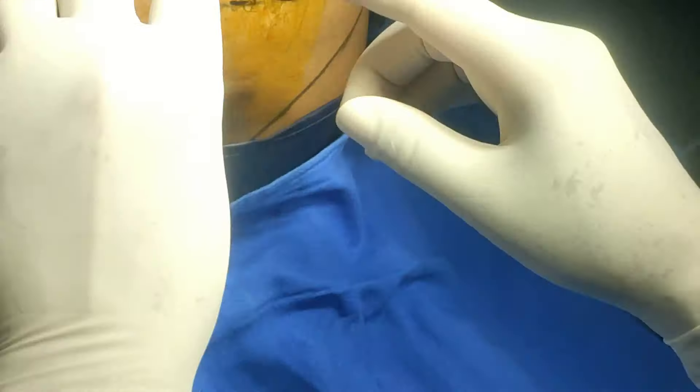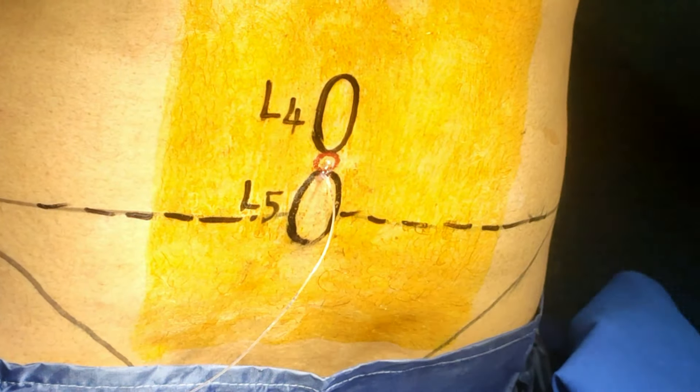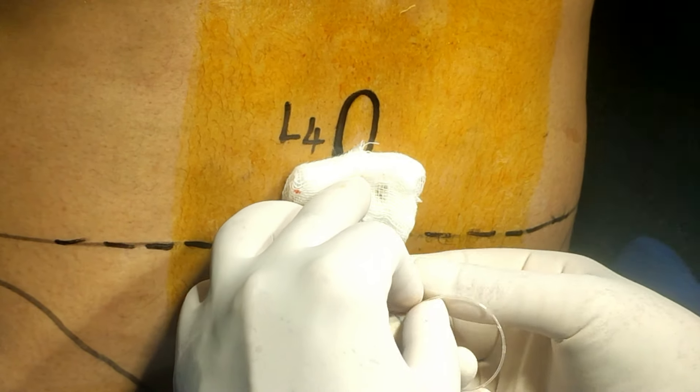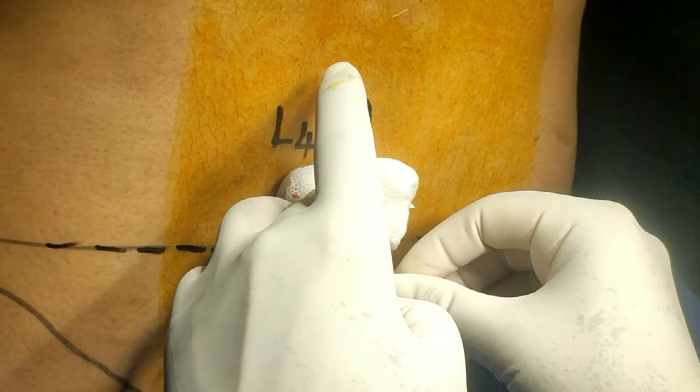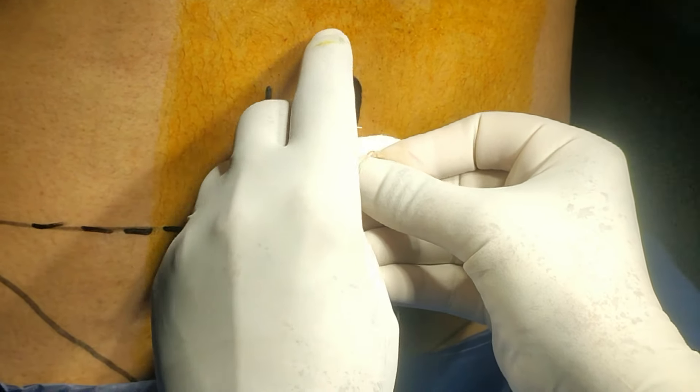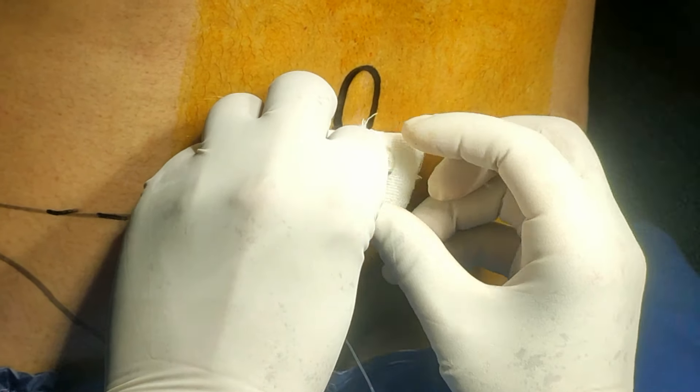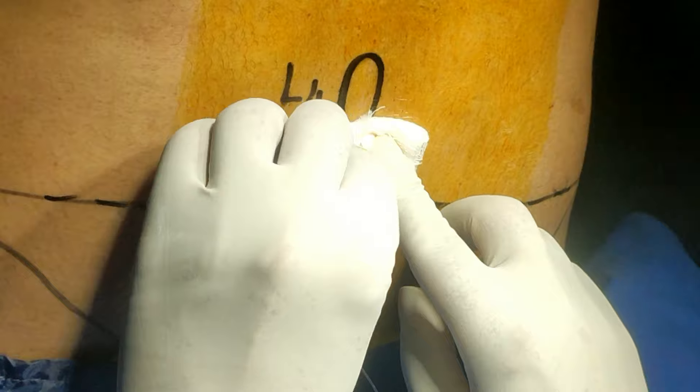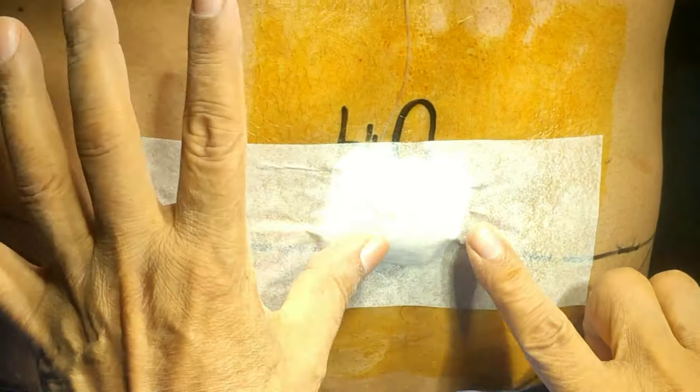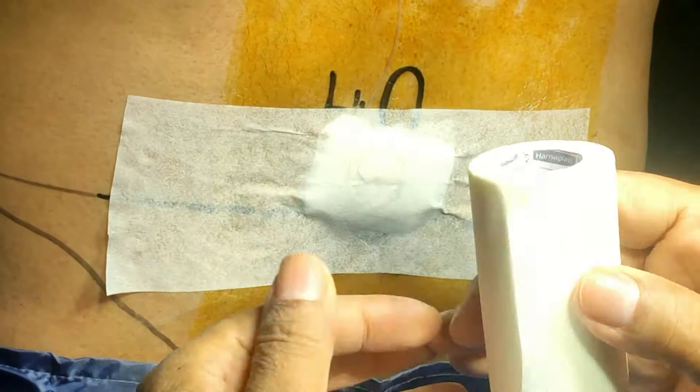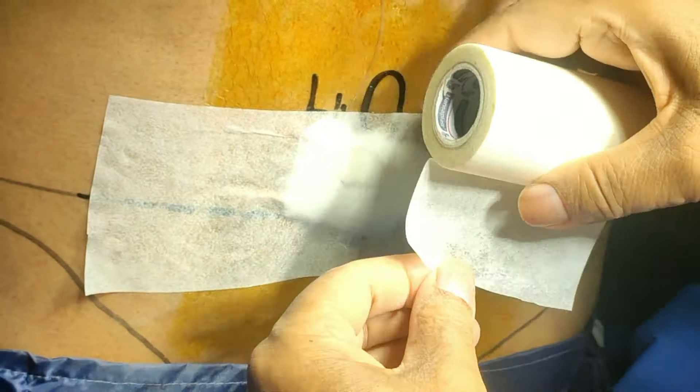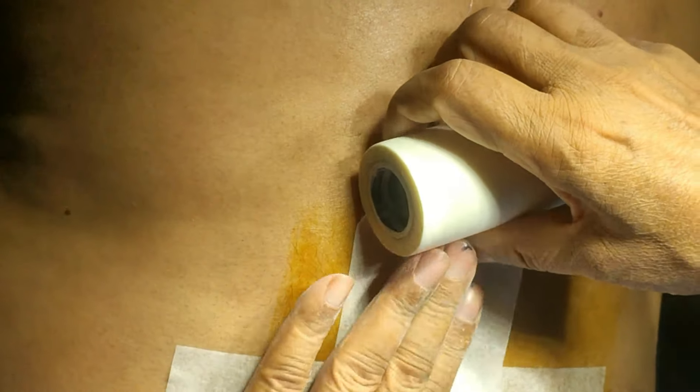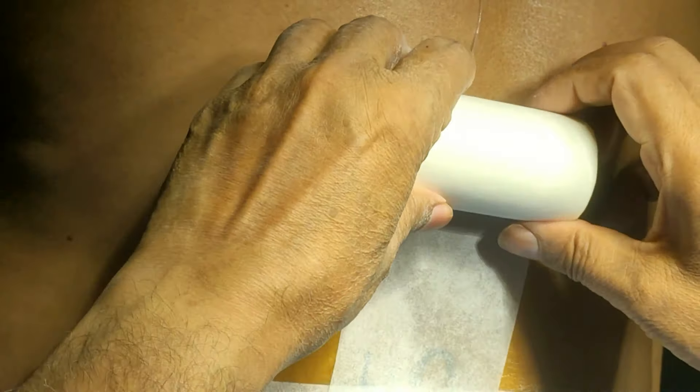Now just fix this and apply the tape. Make a loop here. Because I have added the pad there, now take the loop. Keep this catheter in the center. Now keep this setup in place. Thank you.